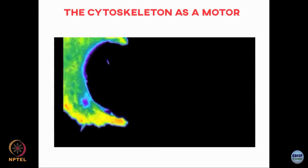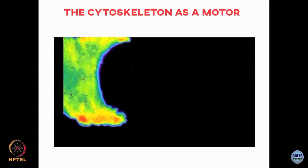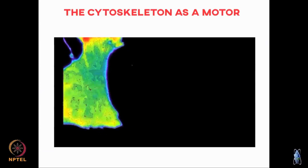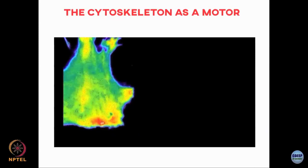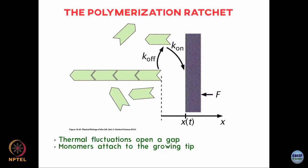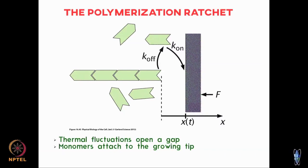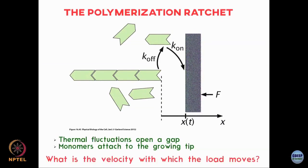They can exert forces on the cell membrane, deform it, and through that achieve locomotion or some other function. This is what is called the polymerization ratchet. Here is my filament — microtubule, actin, whatever — it can add subunits with some rate K_on and dissociate with some rate K_off. It is growing against a barrier, which could be like the cell membrane or some other membrane or even large proteins. As it polymerizes against this barrier, the barrier can move — x(t) can change with time. You can ask: what is the velocity with which this barrier, which I call the load, moves due to this polymerization? It is called a polymerization ratchet.